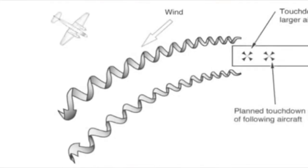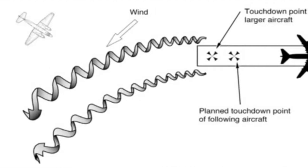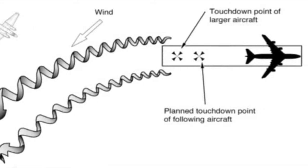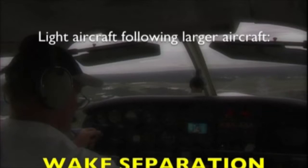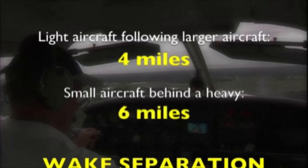Incident data shows that the greatest potential for a wake vortex incident occurs when a light aircraft is turning from base to final behind a heavy aircraft flying a straight-in approach. Use extreme caution to intercept final above or well behind the heavier aircraft. The pilot is responsible for wake turbulence separation. On an instrument approach, the rules are firm: a light aircraft following a larger aircraft requires four miles of separation, and for a small aircraft behind a heavy aircraft, it's six miles.